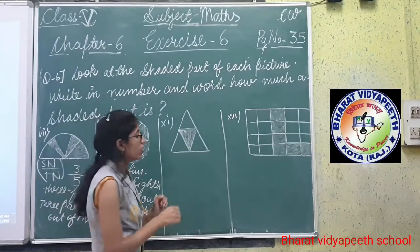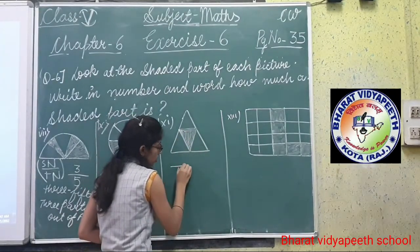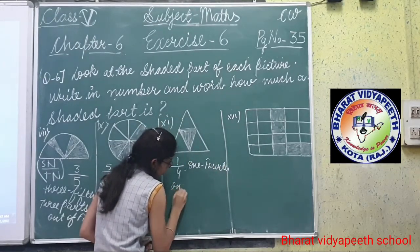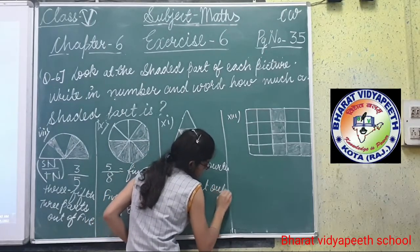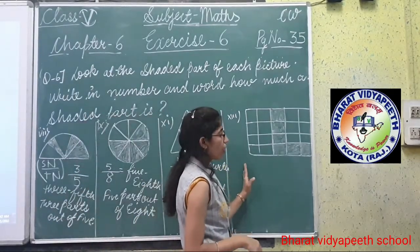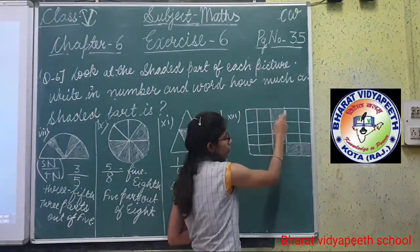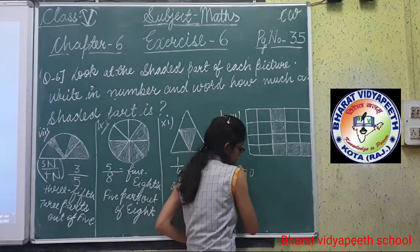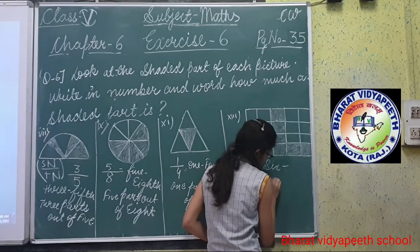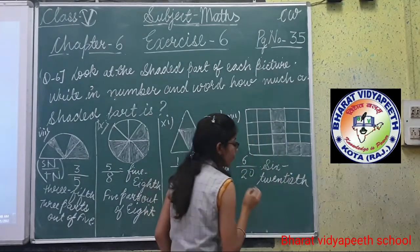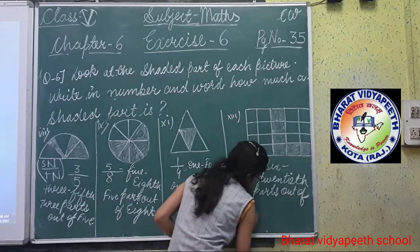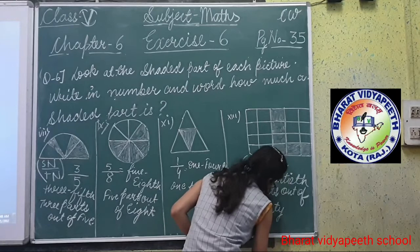Now see the 11th one. Total number of parts: 1, 2, 3, 4. Shaded part: 1. So we write 1 over 4. Second formula: 1 part out of 4. Clear to you all? Now see the 13th one. Total number of parts: 15. Shaded part: 6. How can we write? 6 over 28 — that is 6 parts out of 28. Clear to you all? Second formula: 6 parts out of 3. Is it clear to you all?